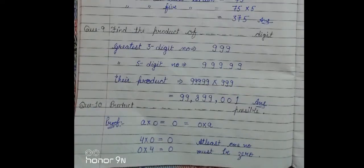Next question number nine. Find the product of the greatest three digit number and greatest five digit number. So, here we have greatest three digit number, three times nine which is 999. Greatest five digit number is five times nine which is 99999. And we multiply these two numbers and we get our answer. This is our required answer. I hope this is clear.